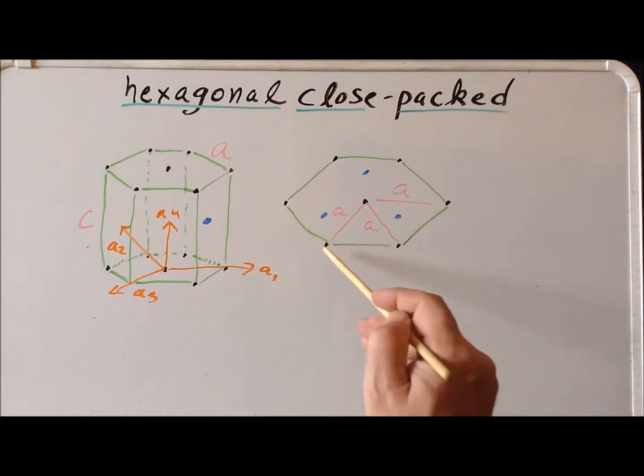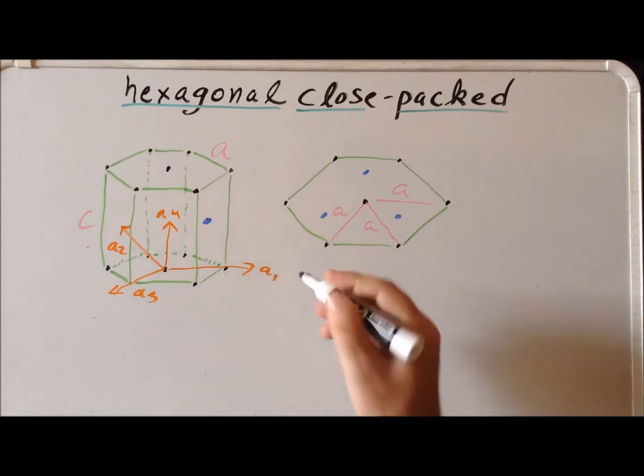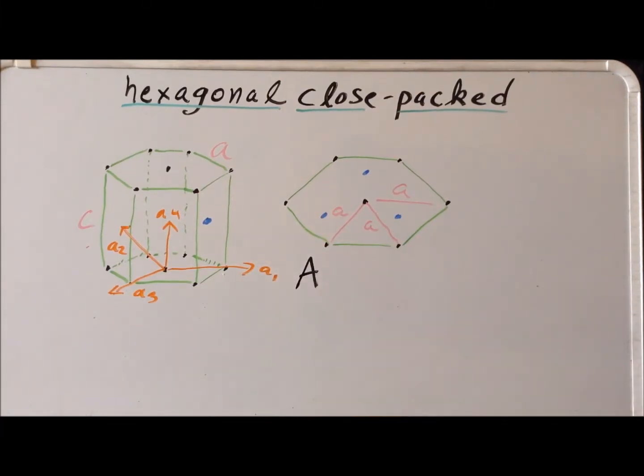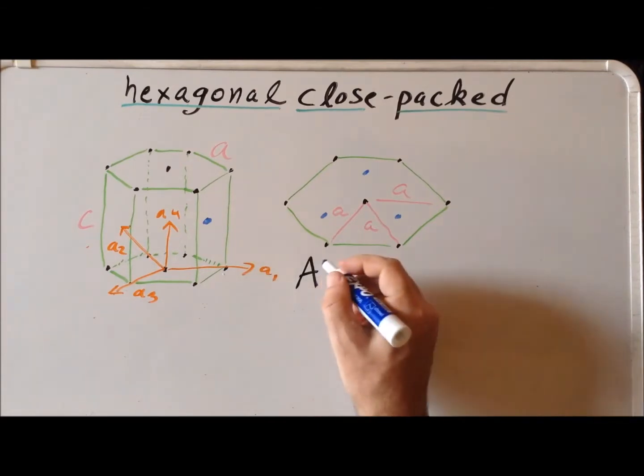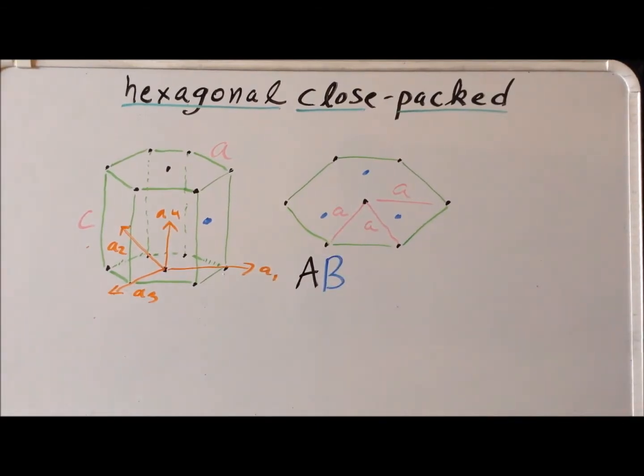And we can see this clearly because the blacks are capital A. And then the blue colored dots are the capital B layer. So we can remind ourselves that the stacking layer A is in black, whereas the stacking layer B is in blue. And hexagonal close-packed gives us this alternating pattern.